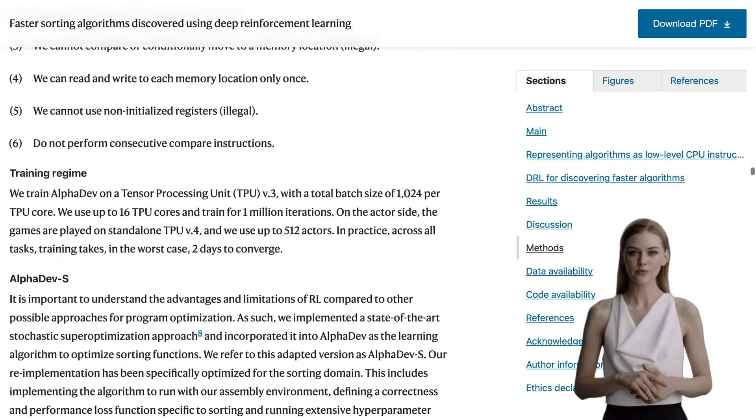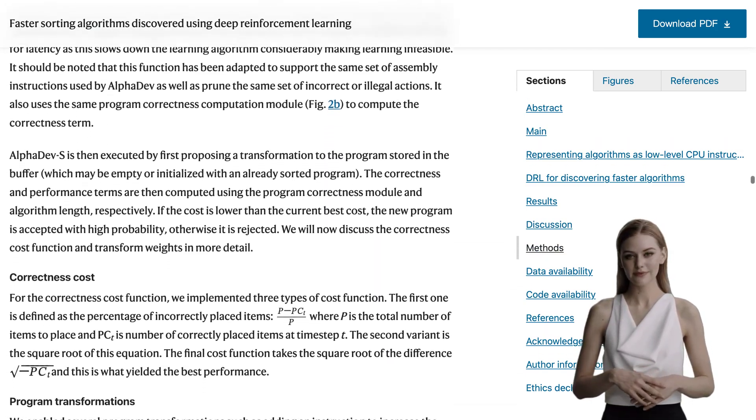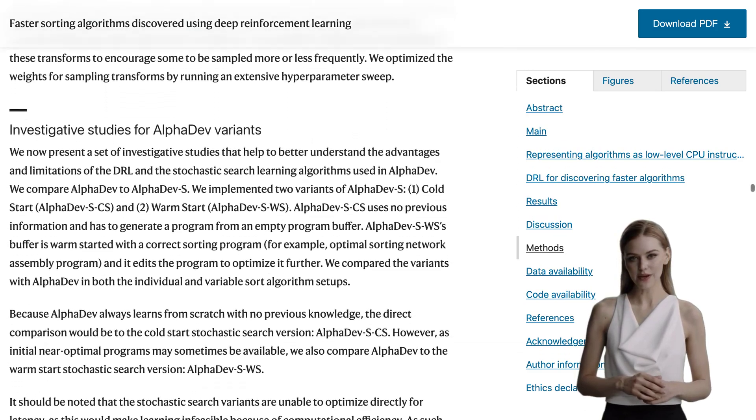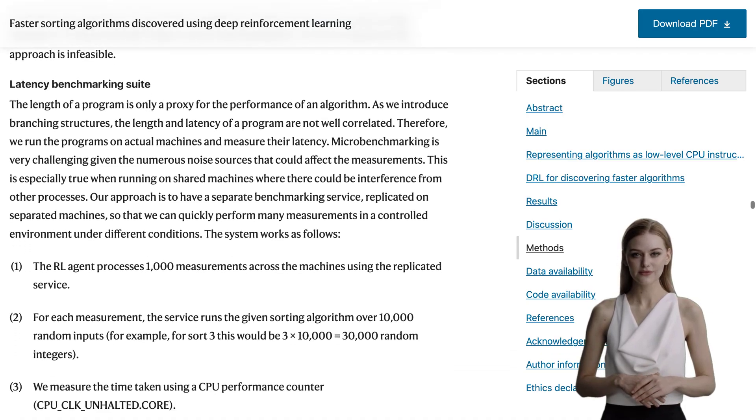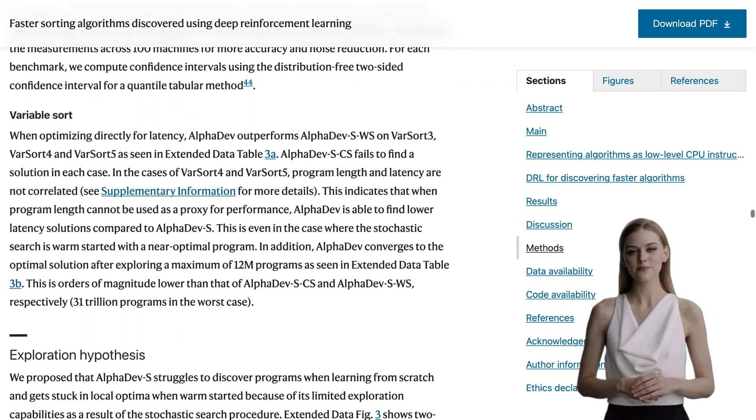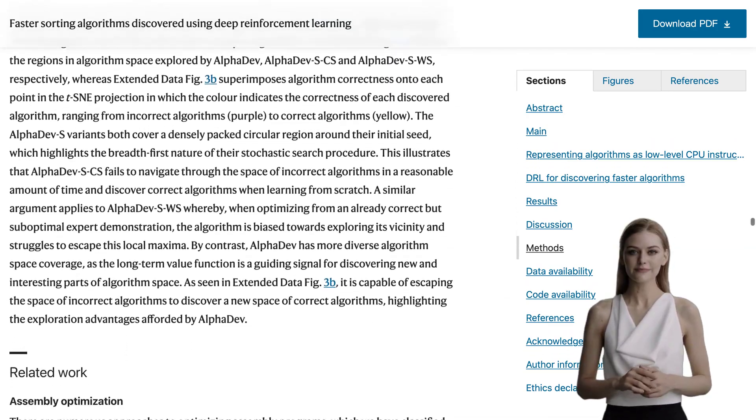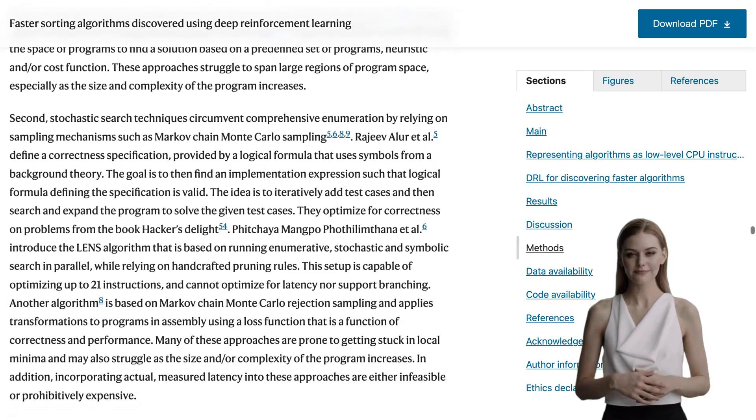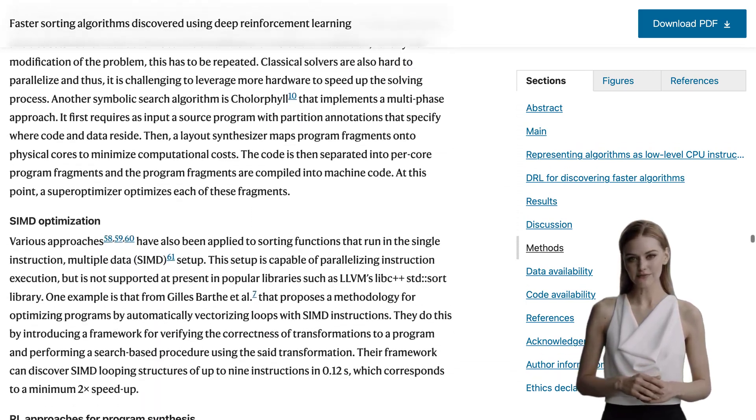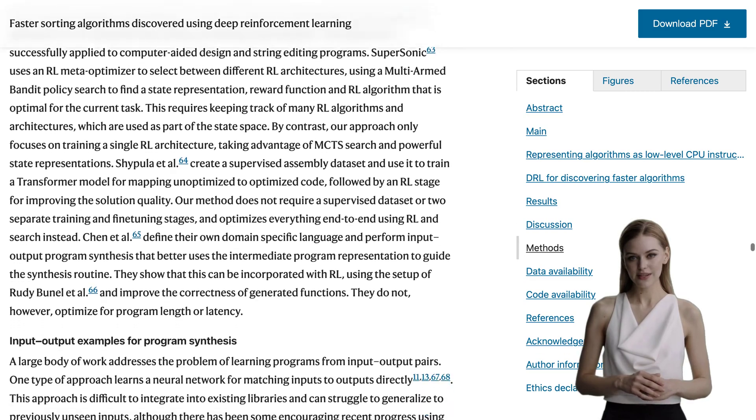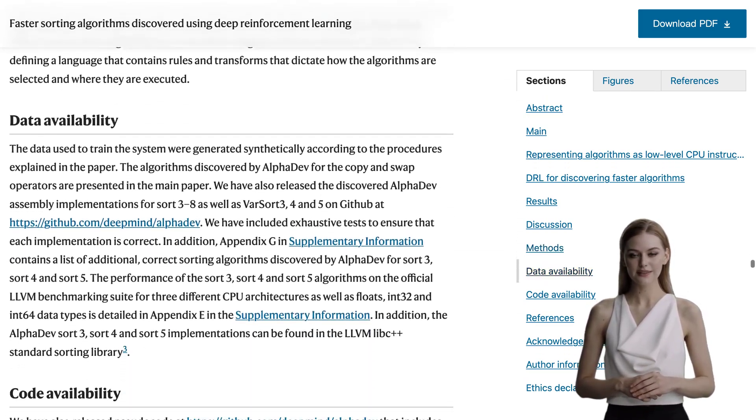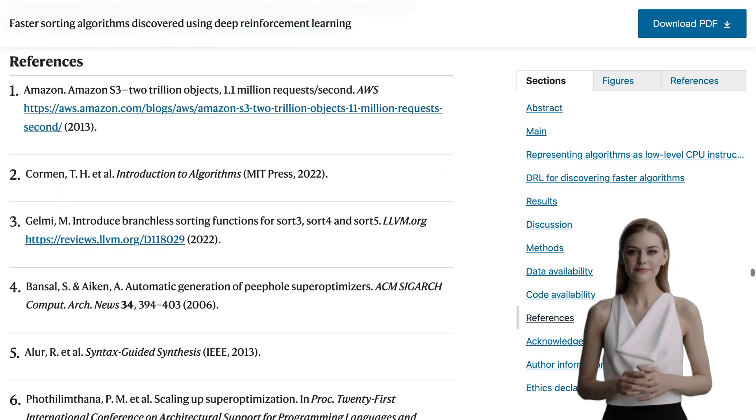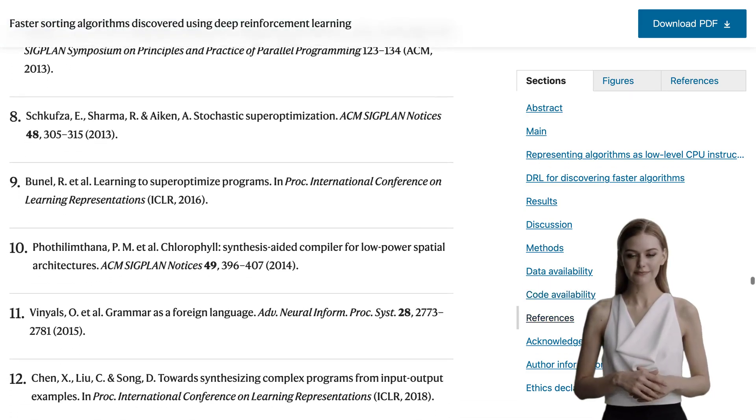These newly discovered algorithms have been incorporated into LLVM C++ library used by millions of developers worldwide. The impact is significant improvements up to 70% for sequences with a length of 5, and roughly 1.7% for sequences exceeding 250,000 elements across different data types such as UNT32, UNT64, and Float on ARMv8, Intel Skylake, and AMD Zen 2 CPU architectures.